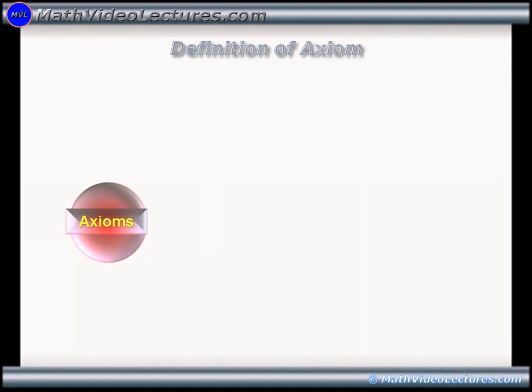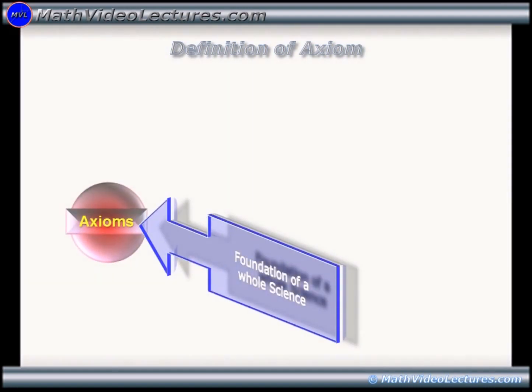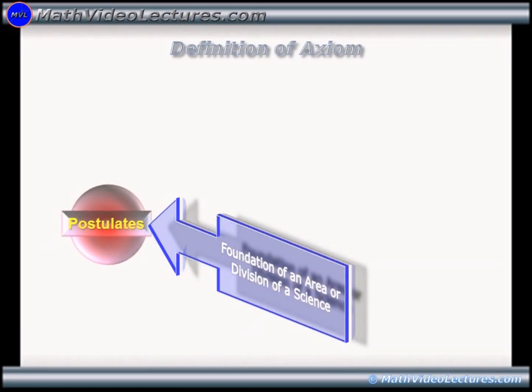Some authors use indistinctively the word postulate when referring to axioms. However, here we'll make a distinction by saying that axioms are used as the foundation for a whole science, while postulates are used as the foundation for only an area or division within a science.